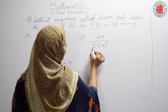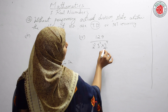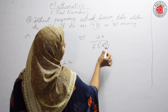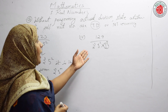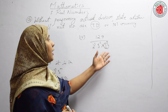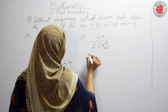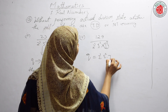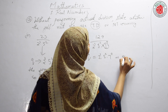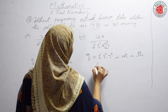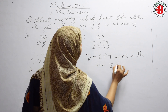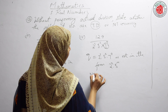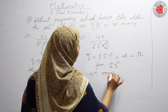Now look at 129/(2³ × 5² × 7⁹). Here you have 2, 5, and also 7. We do not need any factor other than 2 and 5. Both 2 and 5 are available, but 7 is extra. So Q = 2³ × 5² × 7⁹ is not in the form 2ⁿ × 5ᵐ, and therefore 129/(2³ × 5² × 7⁹) is a non-terminating recurring decimal.